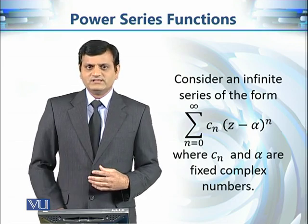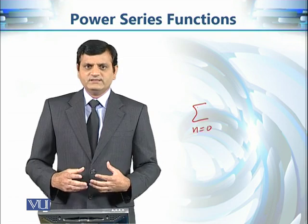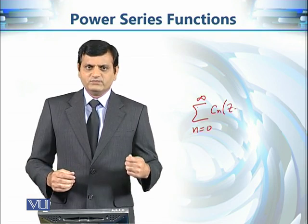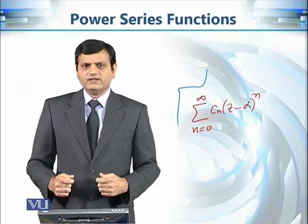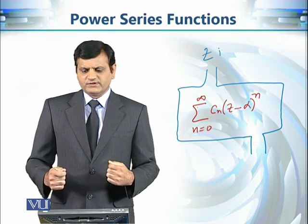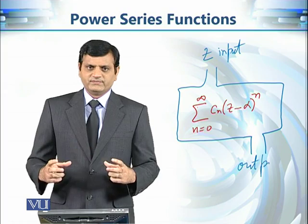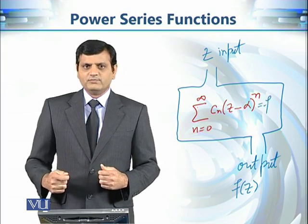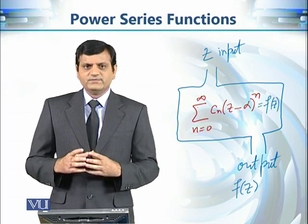When we change the value of z, the whole expression changes. If we fix z = 0, it gives us one infinite series; when we change z to 1, it gives another. So this infinite series is like a machine where the input is the complex number z and the output is another complex number — meaning this expression defines a function.